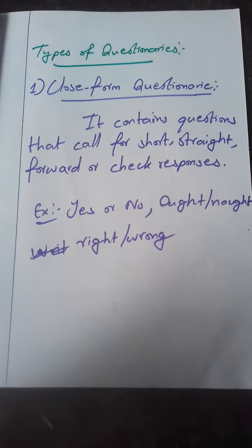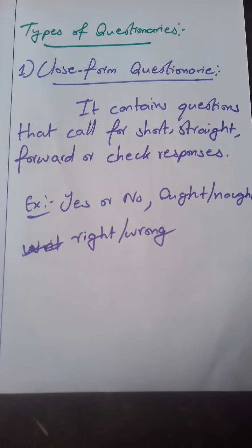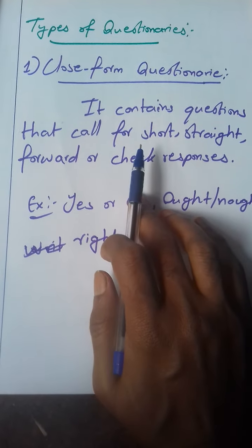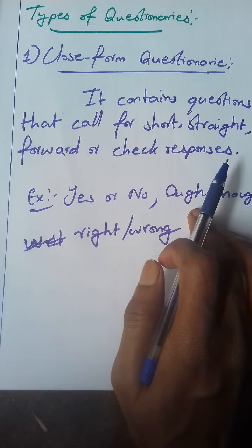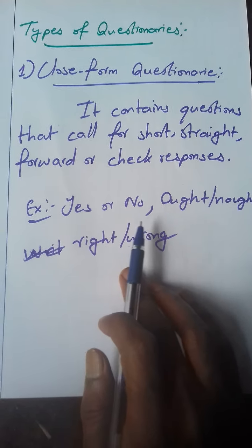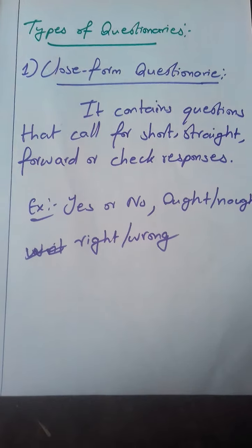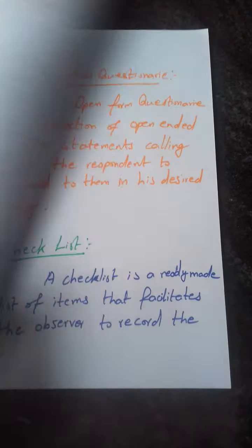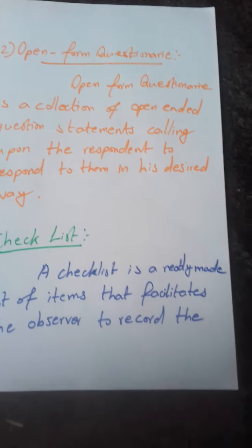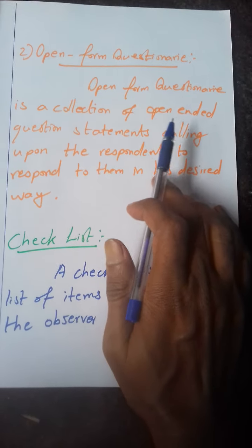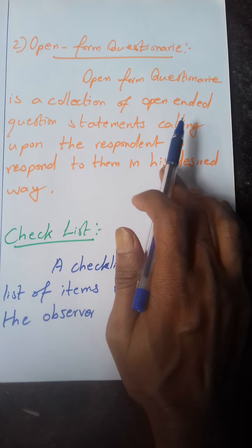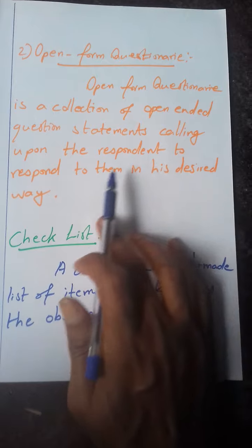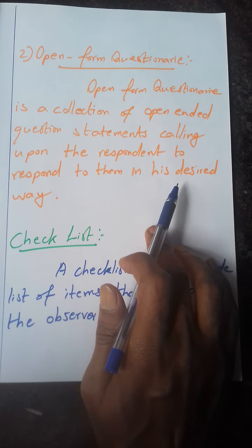Types of questionnaires: closed form and open form. Closed form contains questions that call for short, straightforward, or check responses — for example, yes or no, vote or not, right or wrong questions. Open form questionnaire is a collection of open-ended question statements calling upon the respondent to respond to them in his desired way.